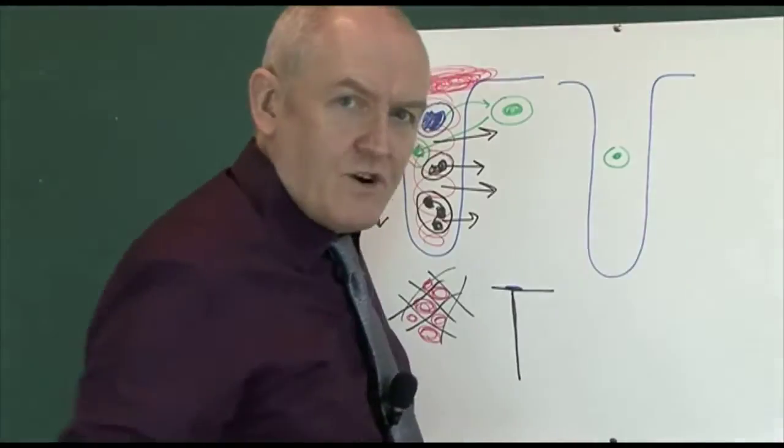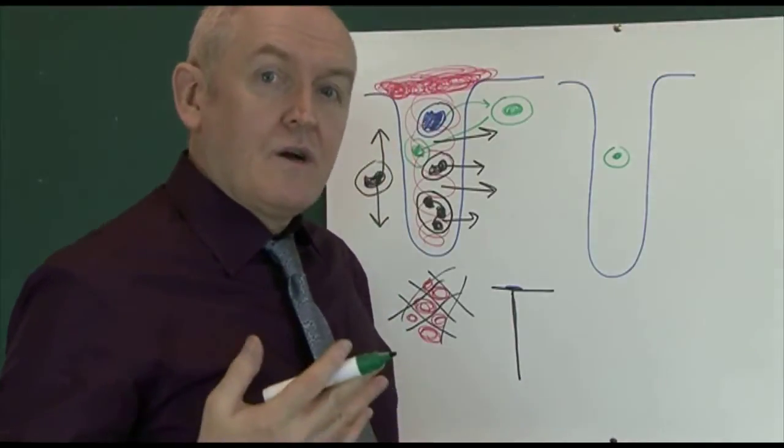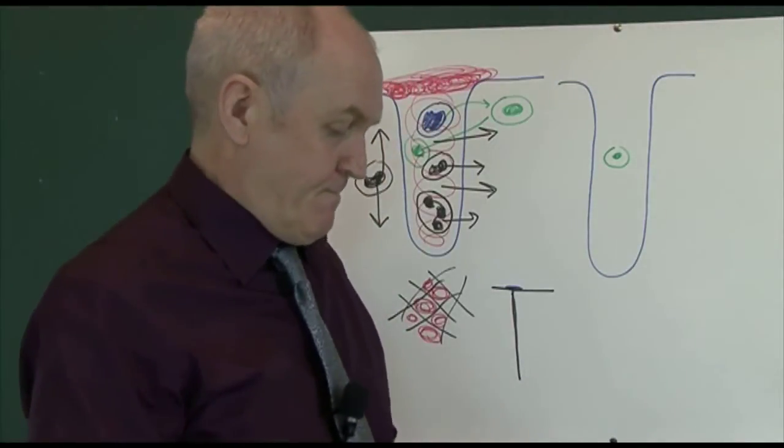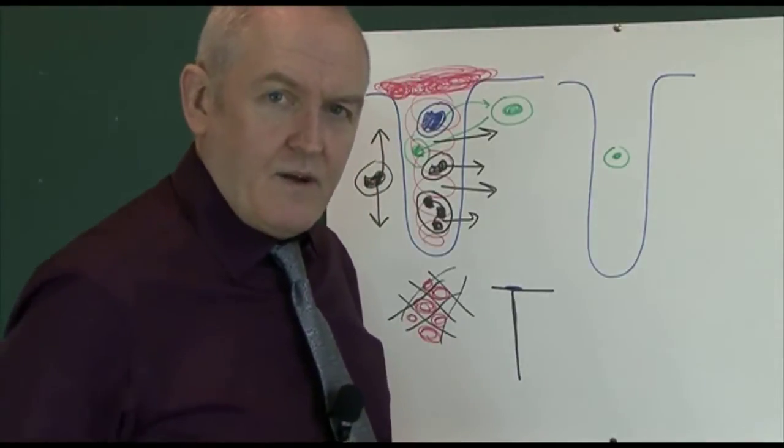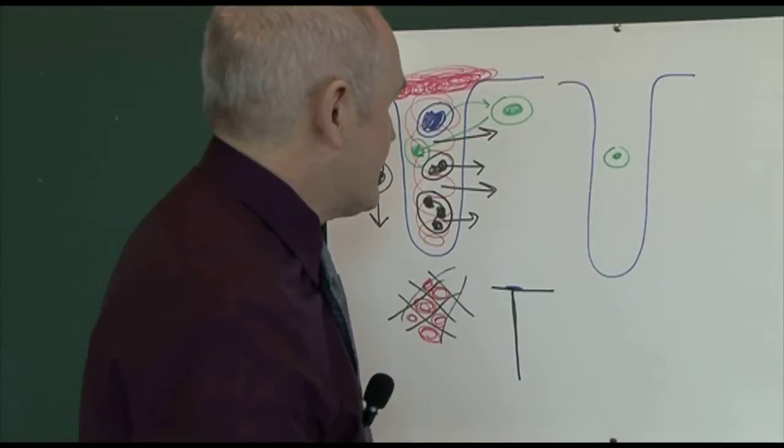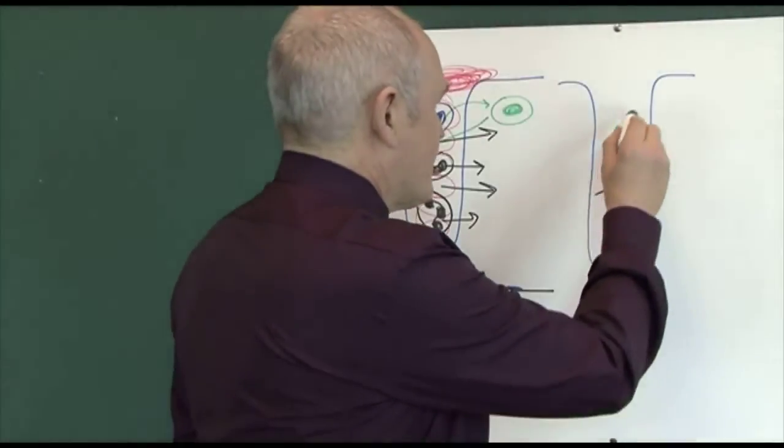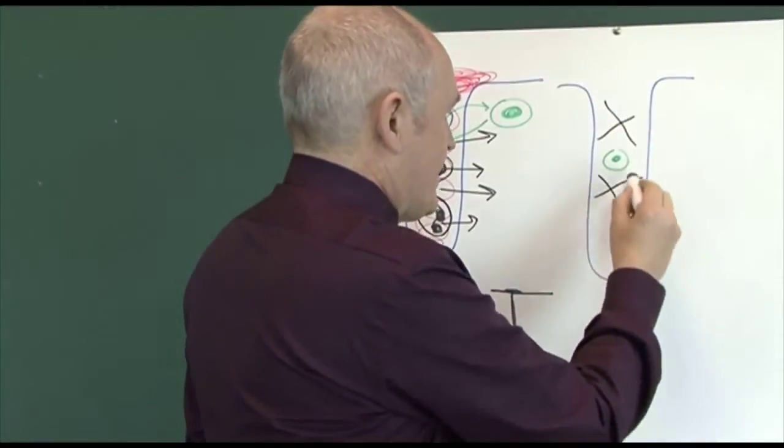And the fibroblasts produce collagen. Collagen is a high tensile strength protein and it's formed in strands. So we're going to get strands of collagen forming in the wound.